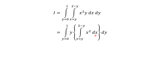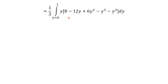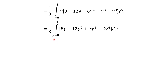Integrating x squared with respect to x gives x cubed upon 3, with limits from y to 2 minus y. Evaluating at the upper and lower limits: replacing x by 2 minus y gives (2 minus y) cubed, and replacing x by y gives y cubed, with a factor of 1 by 3 outside. Expanding the cube of (2 minus y) gives 8 minus 12y plus 6y squared minus y cubed. After multiplying through by y and simplifying, we get 1/3 times the integral from 0 to 1 of (8y minus 12y squared plus 6y cubed minus 2y to the 4) dy.